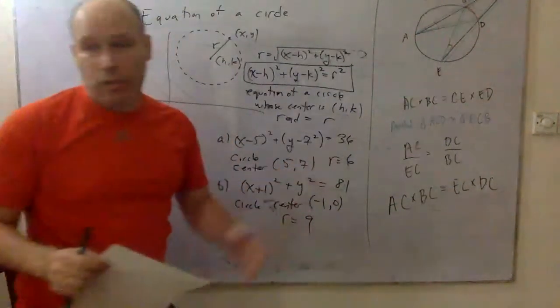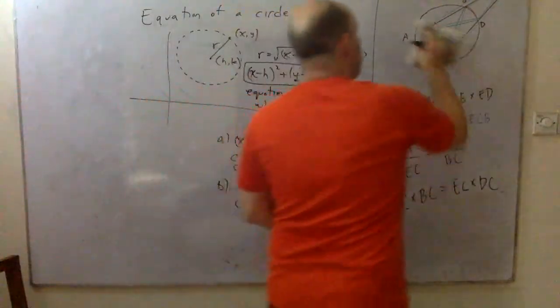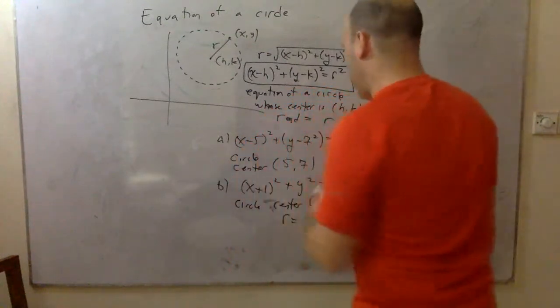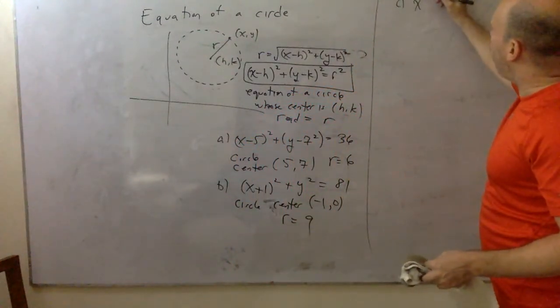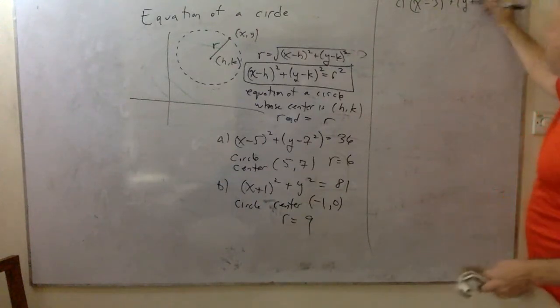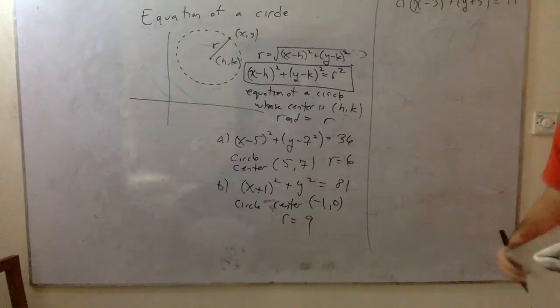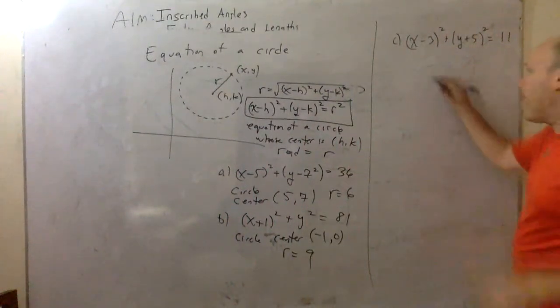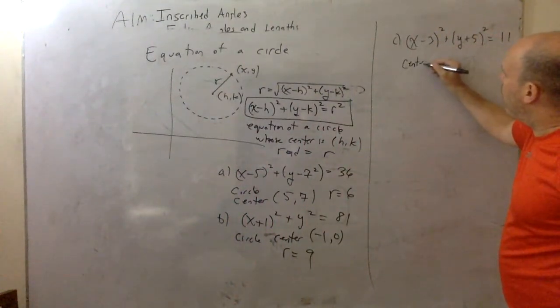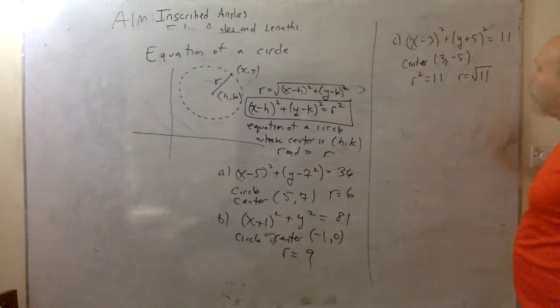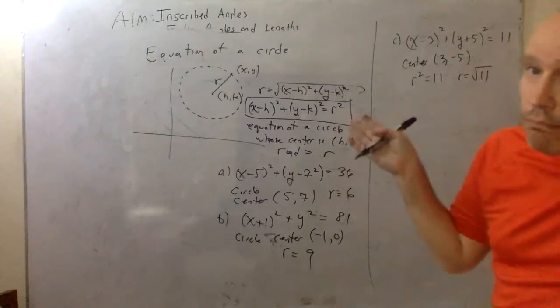Now, do the numbers have to be so perfect all the time? No, you might see an equation like this. Example C: (x minus 3) squared plus (y plus 5) squared equals 11. Well, you keep it cool. You're like, fine. The center is (3, negative 5). And if r squared equals 11, r equals radical 11. It's a segment. It's a length. It's radical 11.